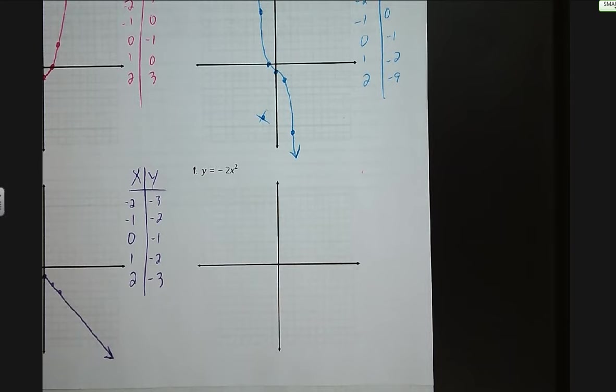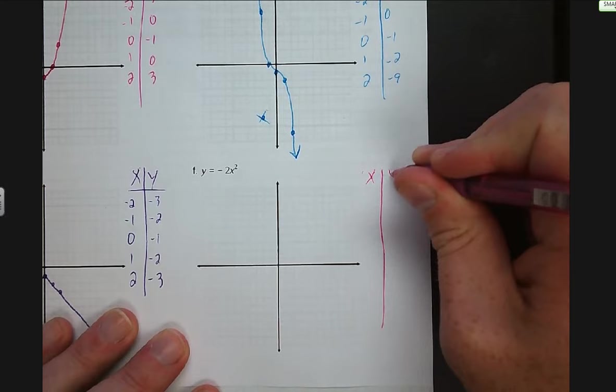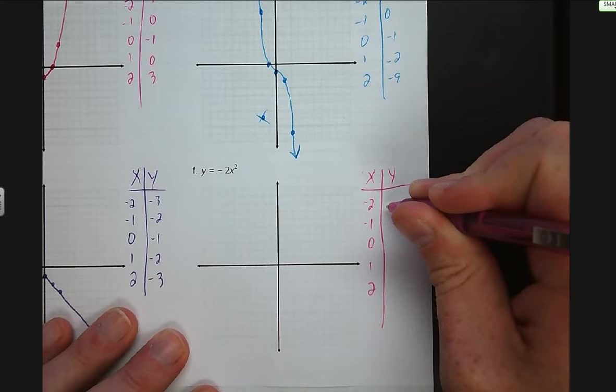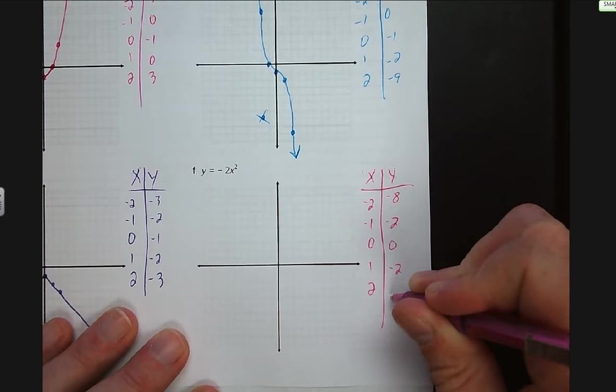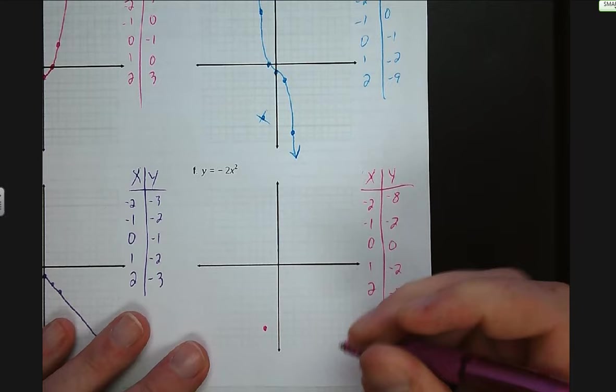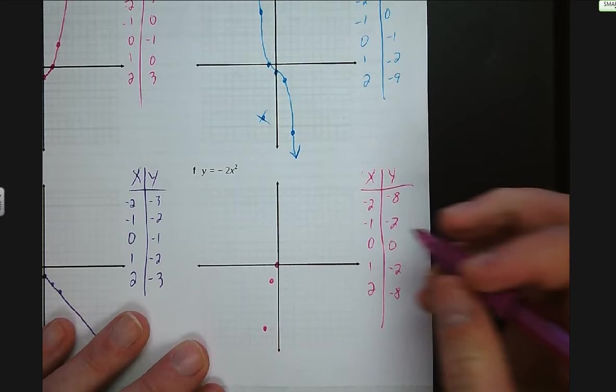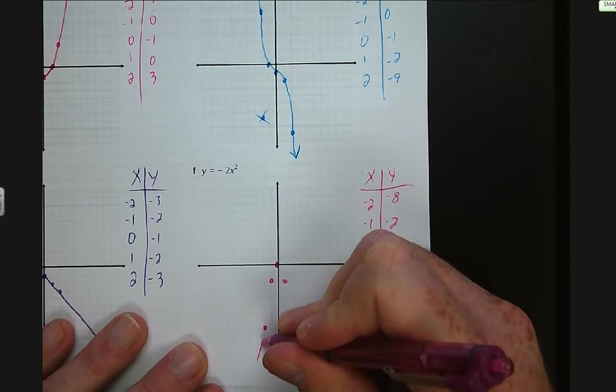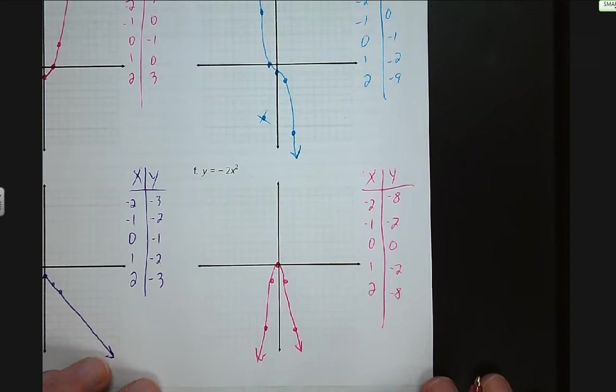Letter F — another quadratic. We have x values of negative two, negative one, zero, one, two, and the y values are negative eight, negative two, zero, negative two, negative eight. We plot those points: negative two and negative eight, negative one and negative two, zero and zero, one and negative two, and two and negative eight. It's quadratic, so it's going to be bell-shaped with a curve — make sure you have arrows on the end.